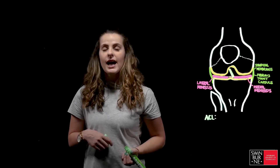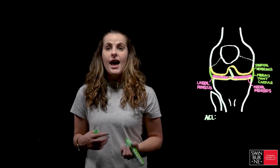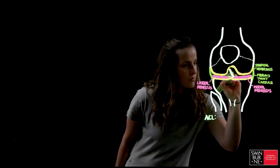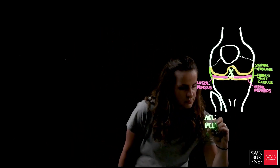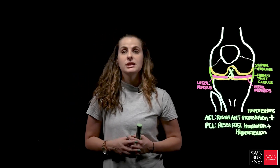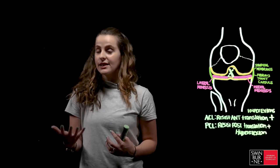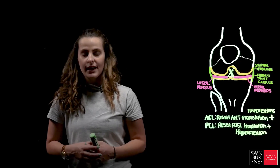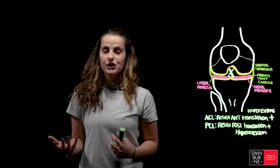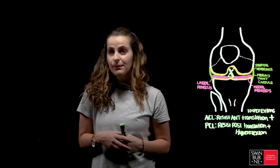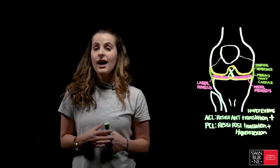We also have the posterior cruciate ligament which attaches to the posterior surface of the tibial plateau, coursing anteriorly and attaching to the medial condyle of the femur. The anterior cruciate ligament is responsible for resisting anterior translation or shearing of the tibia on the femur as well as hyperextension of the knee. In contrast, the posterior cruciate ligament resists posterior translation or slippage of the tibia on the femur, or we can say it resists hyperflexion of the knee.